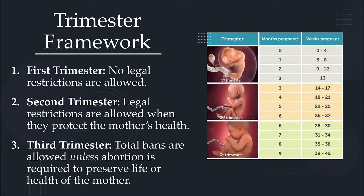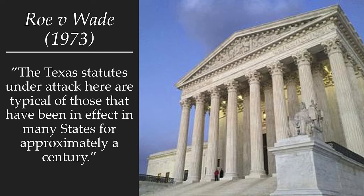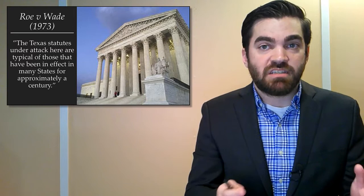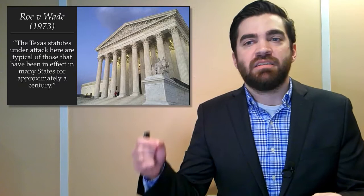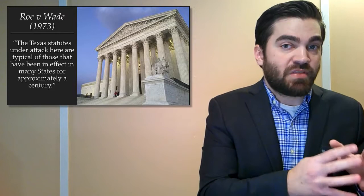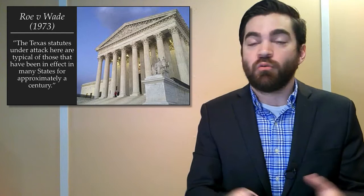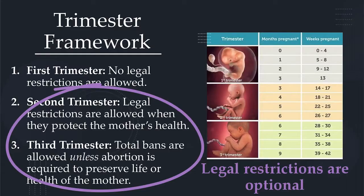This was really shocking to people at the time. In 1973, the court noted that Texas statutes under attack were typical of those in effect in many states for approximately a century — Texas only allowed abortion to save a mother's life. By striking down Texas's law, it struck down similar laws across the nation. So in many places overnight, you went from having laws saying abortion is illegal unless it's to save a mother's life, to saying abortion is legal all the way up to birth if a state wants to allow it.